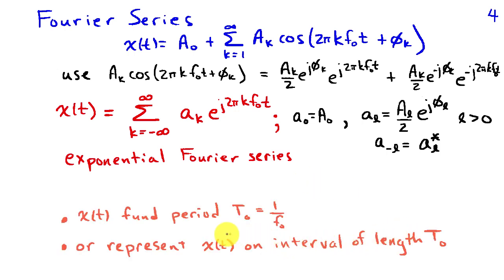We can use the Fourier series to represent a signal x(t) that is periodic and has a fundamental period T₀ equals 1 over f₀. Or if you have a signal in which you're only interested in a finite interval, say some interval of length T₀, you can also use a Fourier series to represent signals on a finite interval. Now if you want to represent a non-periodic signal on an infinite interval, then you need something called a Fourier transform.